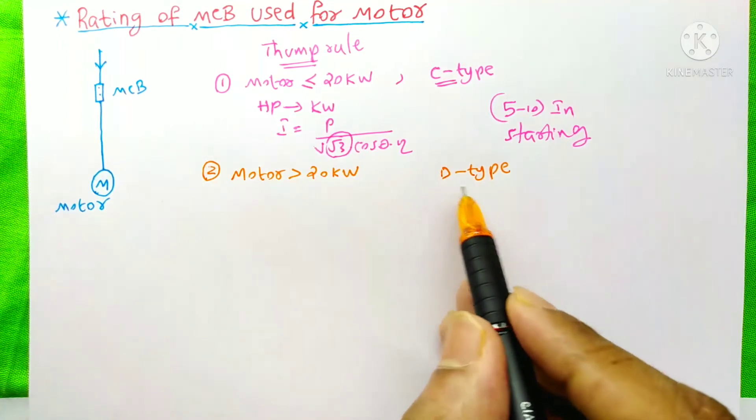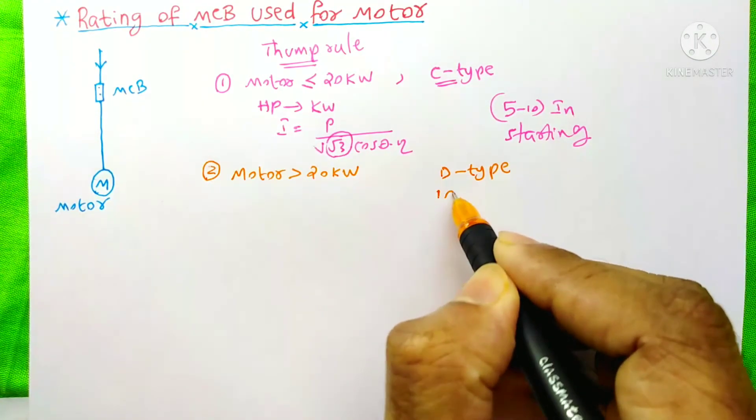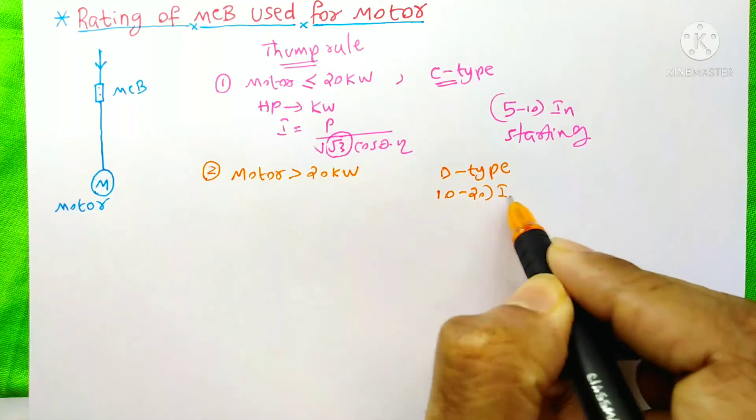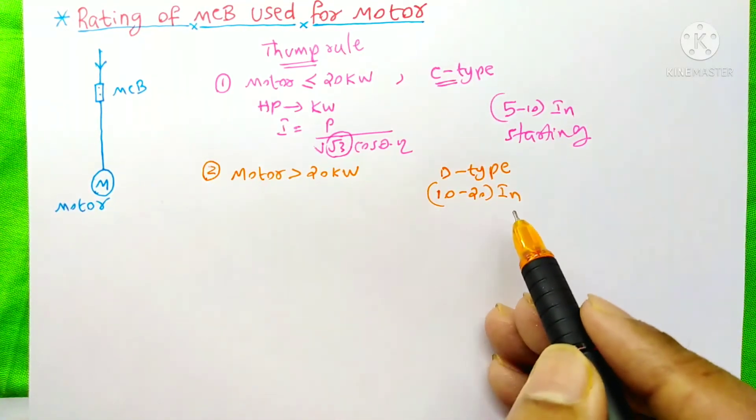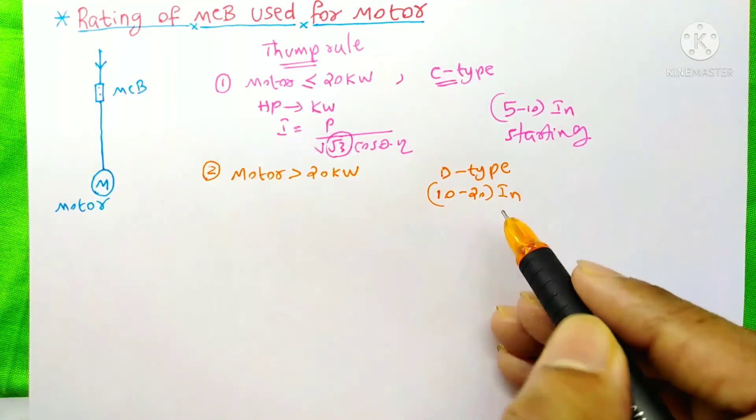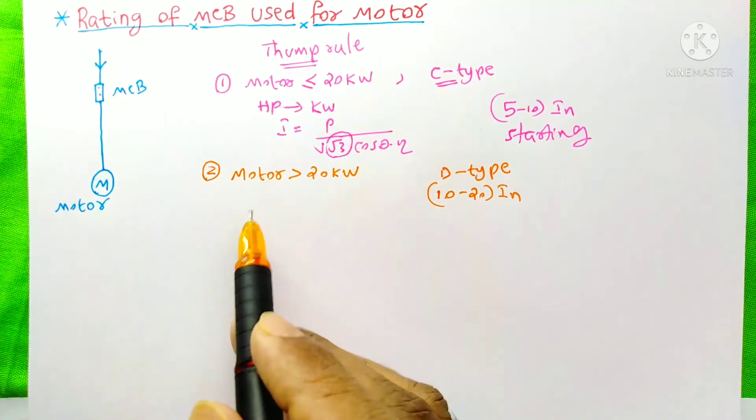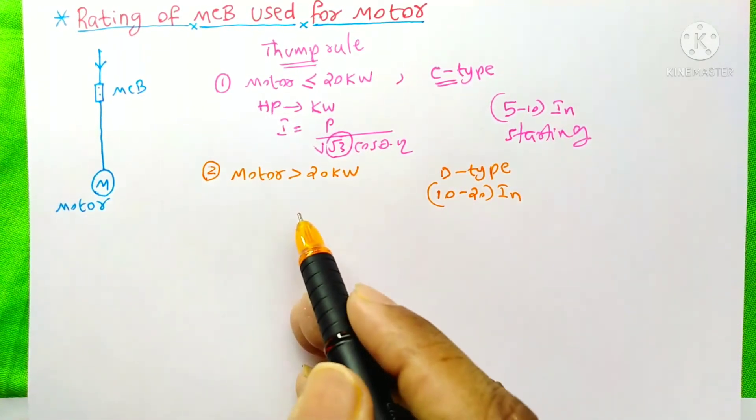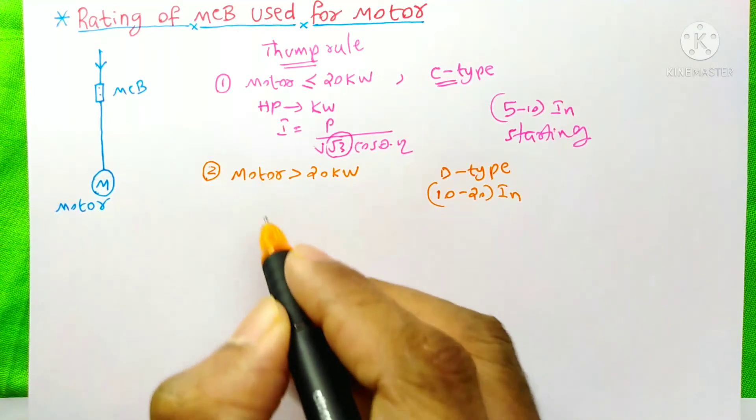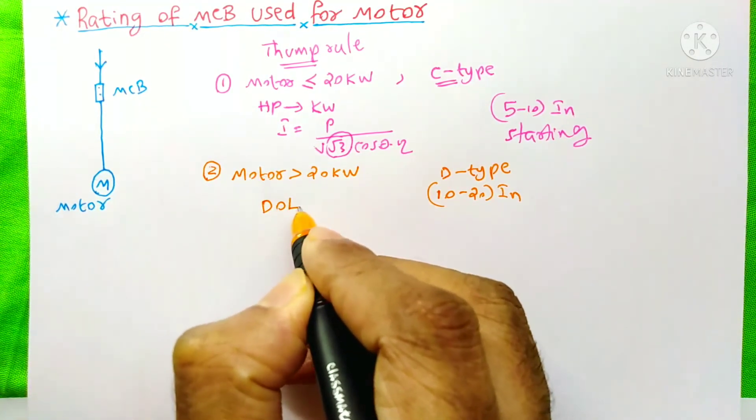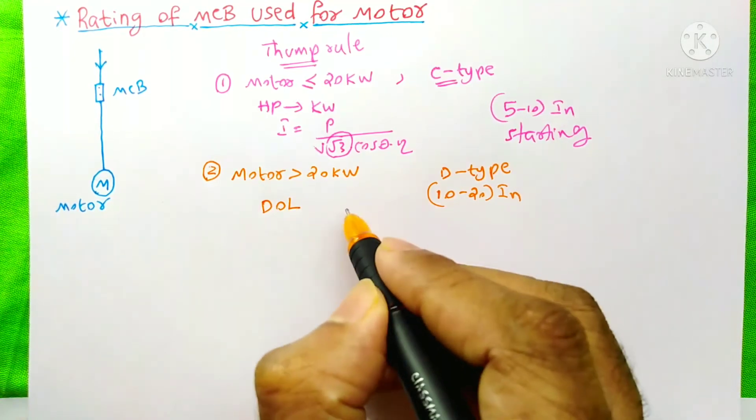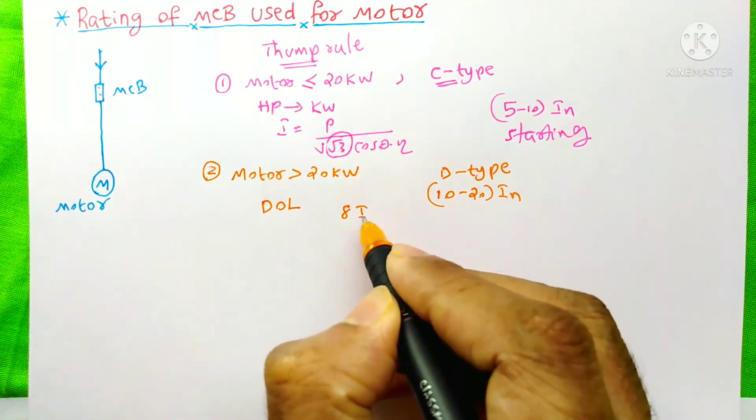We know that D-type MCB will allow 10 to 20 times of the rated current for a short duration of time during the starting of the motor. Generally we know that during the starting of motor, even if the motor is charging with the help of a DOL starter, it would take 8 times of the rated current.